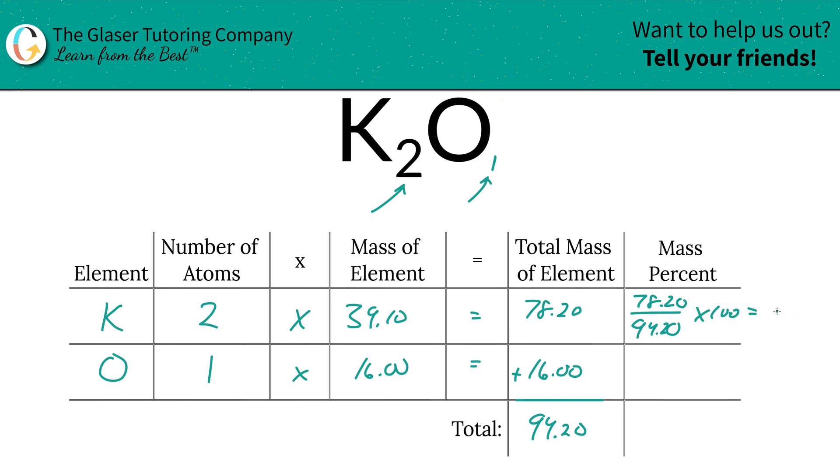Just get to the number, right? So this is going to be 83.01%. And that's all that there is to finding the mass percent of potassium.